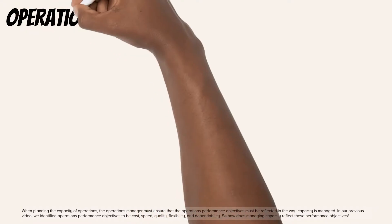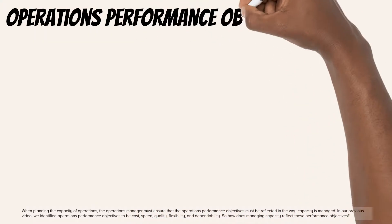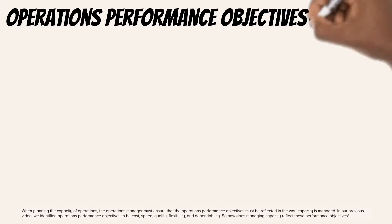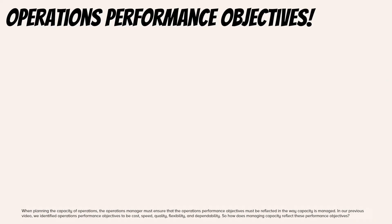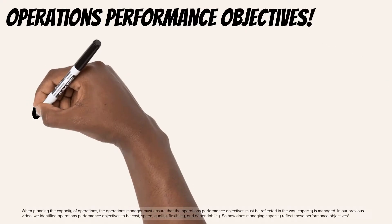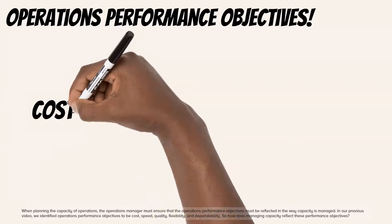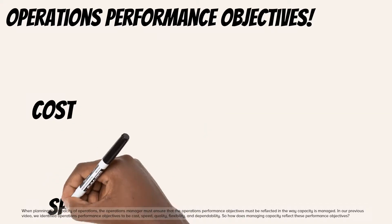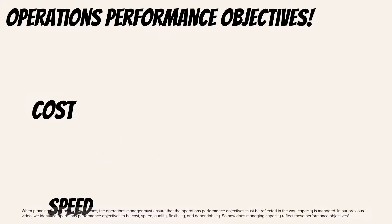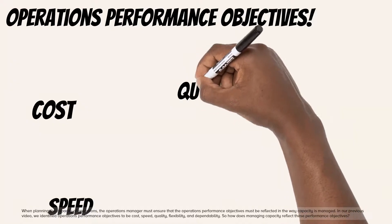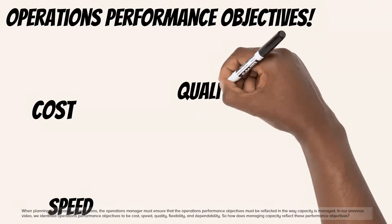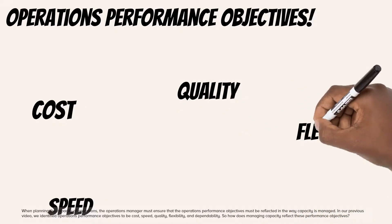When planning the capacity of operations, the operations manager must ensure that the operations performance objectives are reflected in the way capacity is managed. In our previous video, we identified operations performance objectives to be cost, speed, quality, flexibility, and dependability. So how does managing capacity reflect these performance objectives?